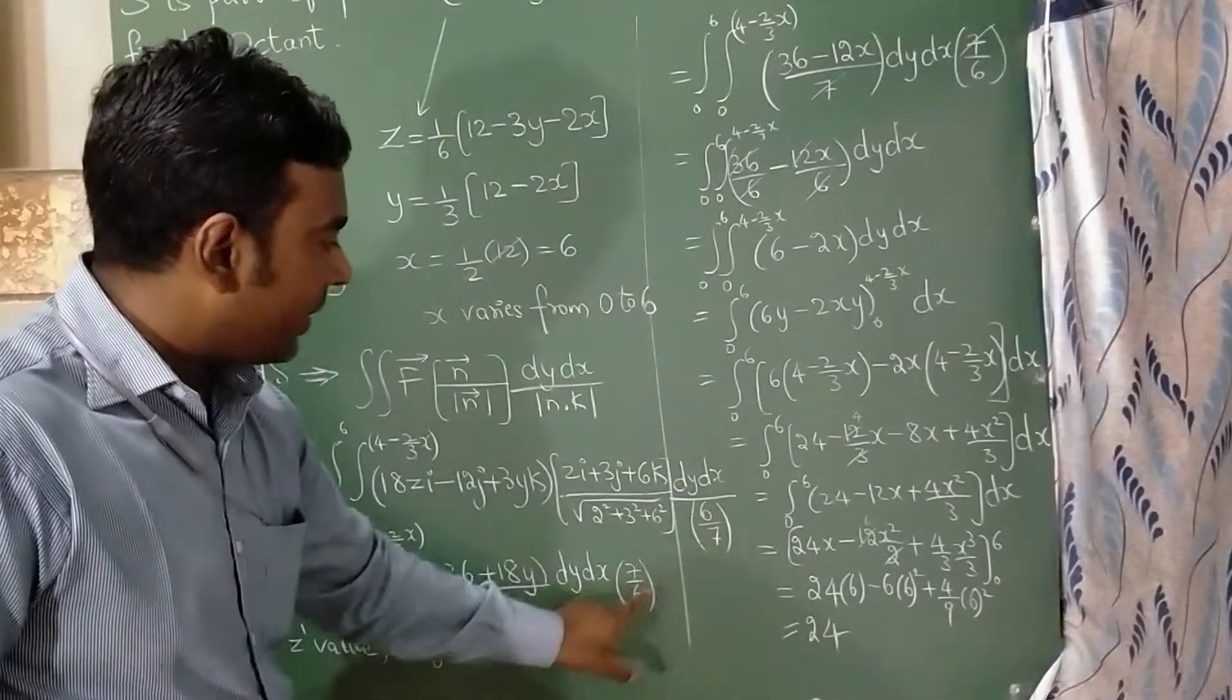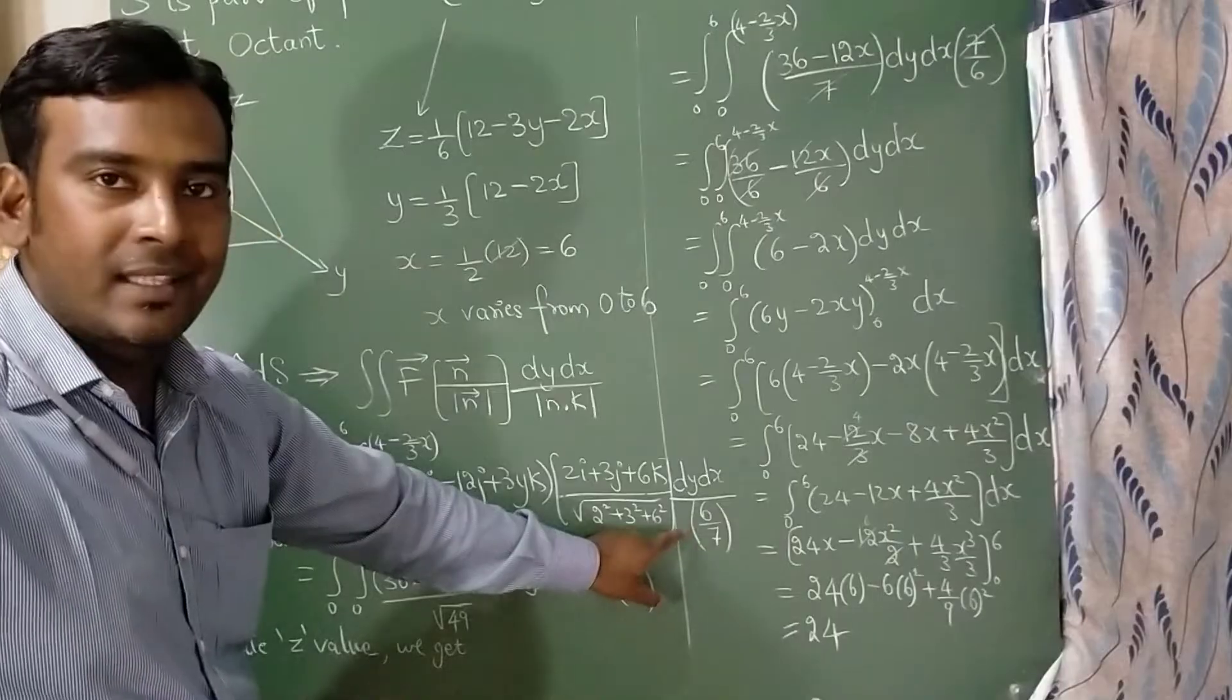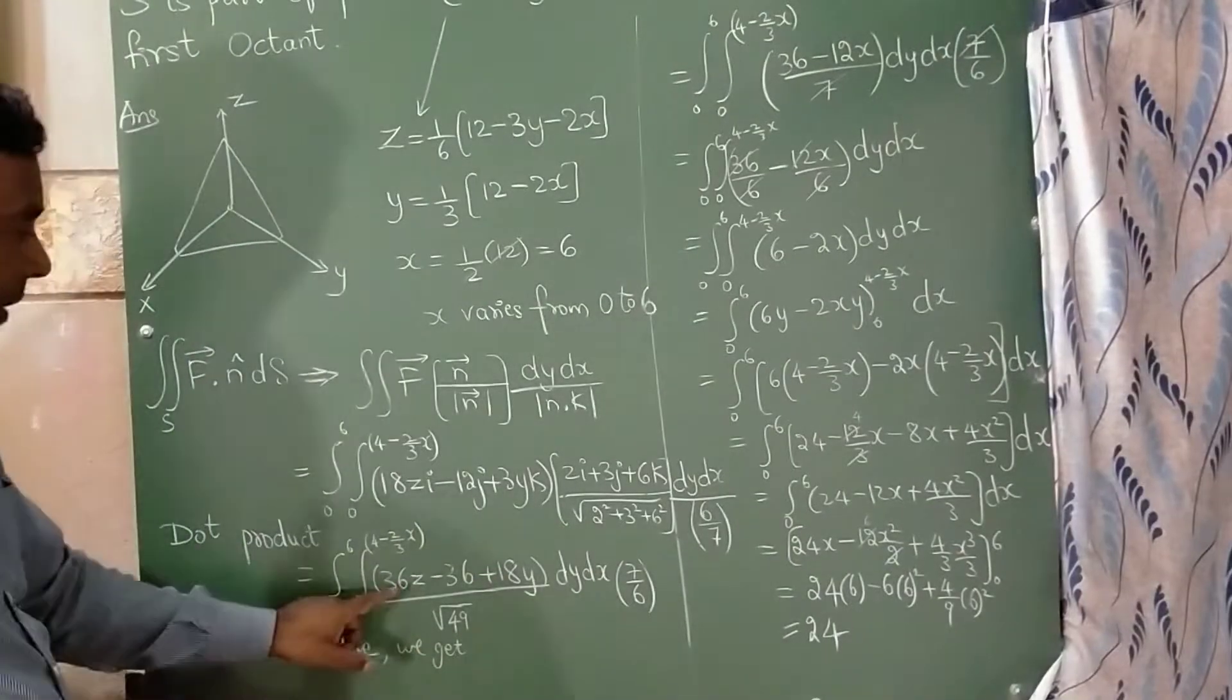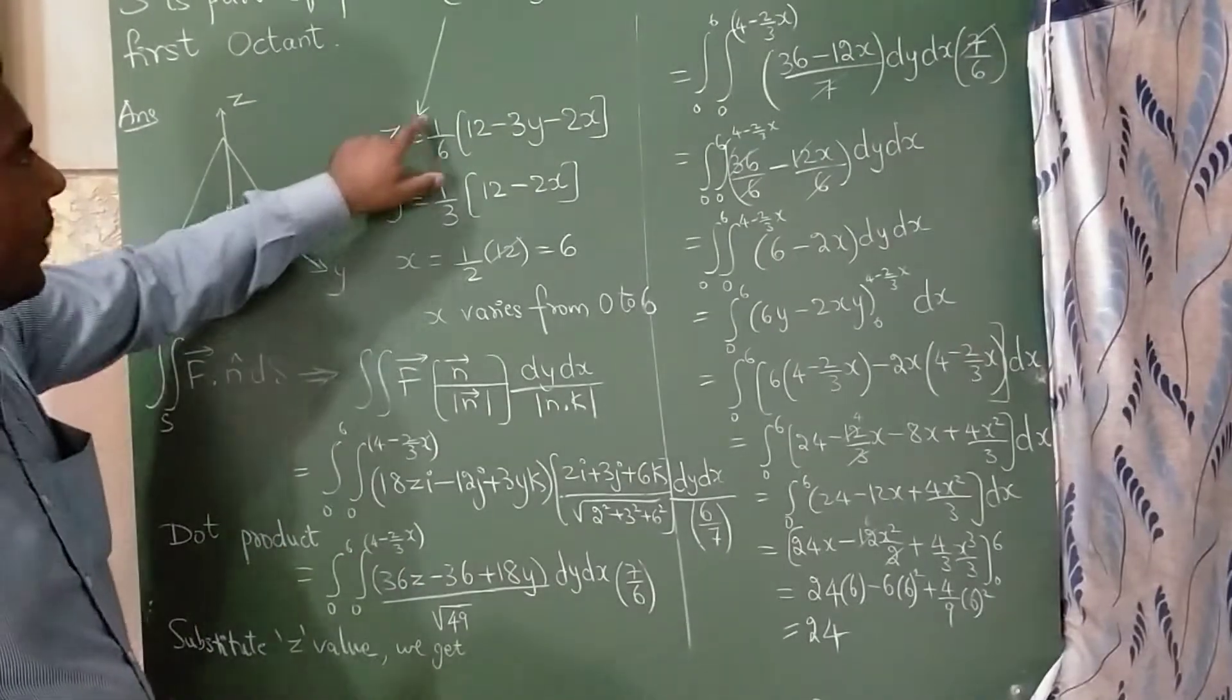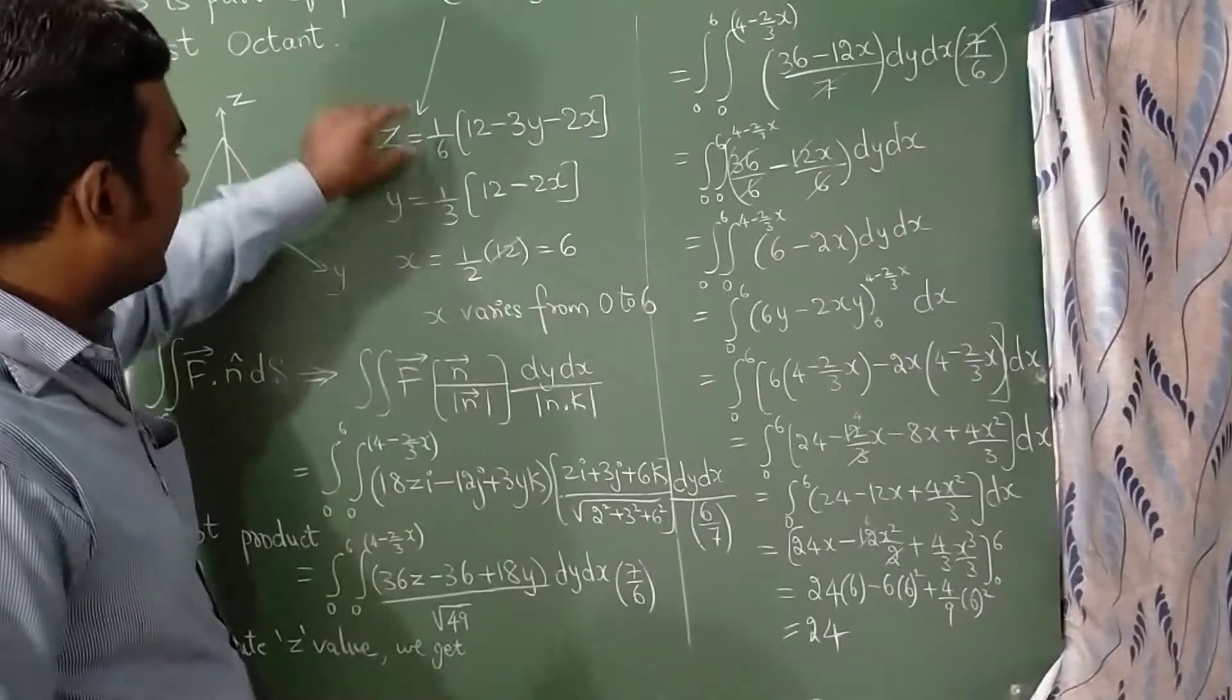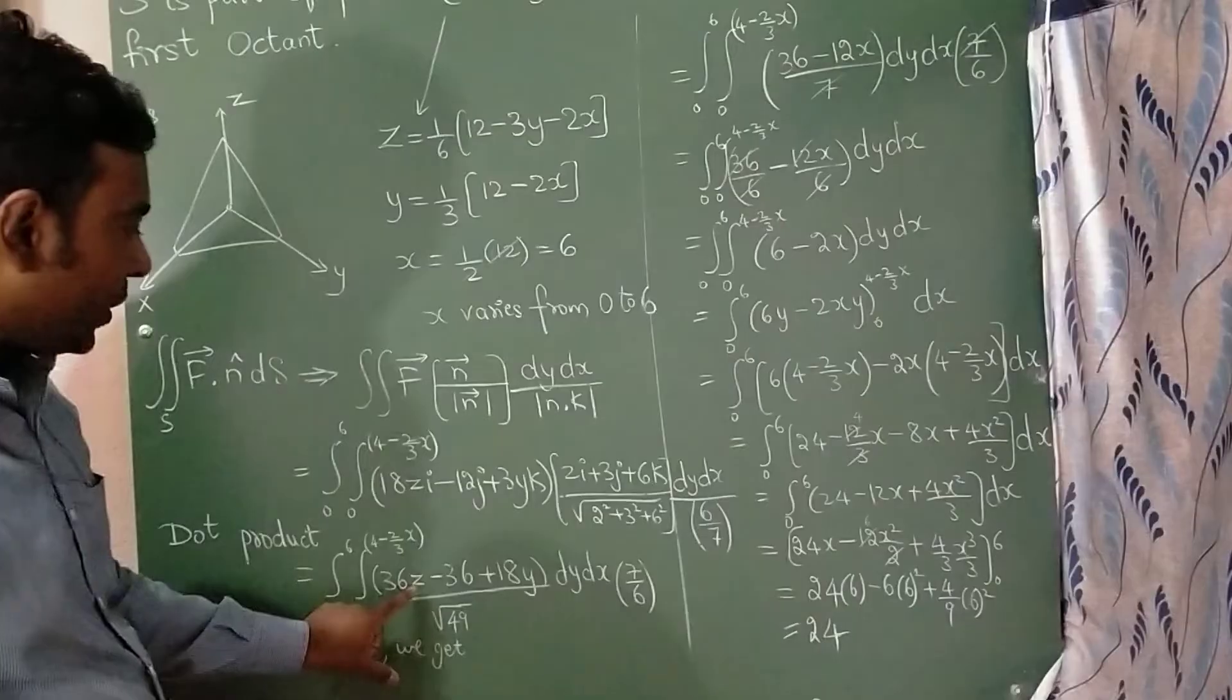Now this 6 upon 7 will become 7 upon 6 since it is in the denominator part. Now 36z, z I have taken here: 1 upon 6, 12 minus 3y minus 2x. This z value I am going to substitute here.